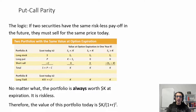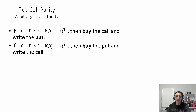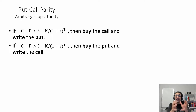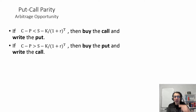What if put-call parity doesn't hold? Then there is an arbitrage opportunity — a risk-free profit. If you observe that C − P is less than S − K/(1+r)^t, you should buy the call and write the put, and you will earn a risk-free profit. Arbitrage means exactly that: a risk-free return. If the opposite case holds, you should buy the put and write or sell the call option, and that will also give you a guaranteed risk-free return.